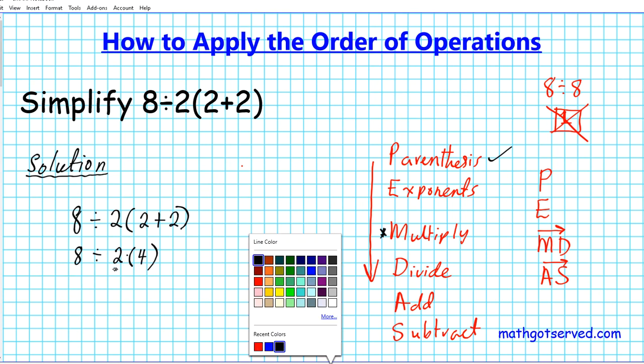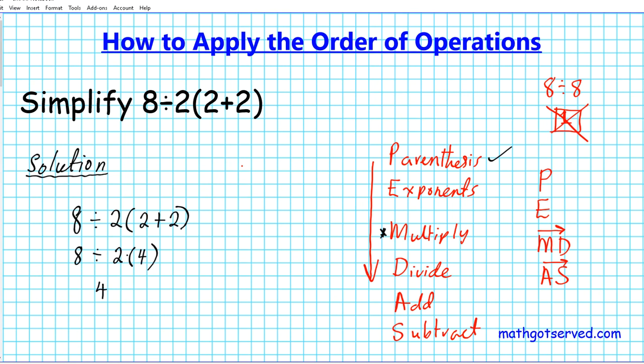So let's go ahead and do that. If we divide 8 by 2 that gives us 4 and then 4 times 4 will give us 16 and that ladies and gentlemen is the correct answer.